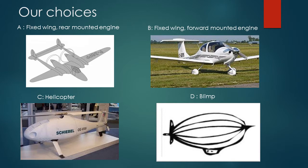These are our choices for the aircraft. A is the fixed wing rear mounted engine, B is the fixed wing forward mounted engine, C is the helicopter, and D is the blimp.